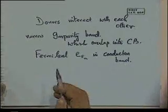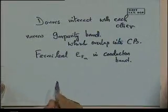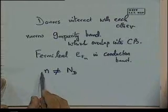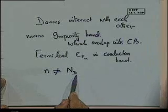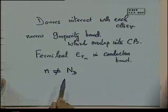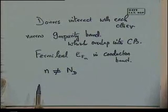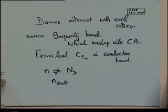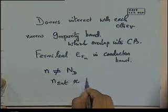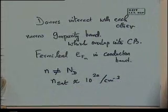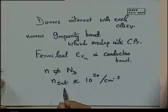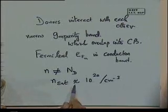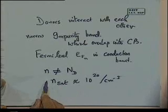Under these circumstances, if we go on increasing the doping concentration, not all dopants will get ionized because the atoms are interacting with each other in ways such that n is no longer equal to N_D — not all donor atoms are creating free electrons even at high temperature. In fact, at some point the carrier concentration saturates at approximately 10 to the power 20 per centimeter cubed. Beyond this, even if you add more arsenic into silicon, the carrier concentration will not increase.